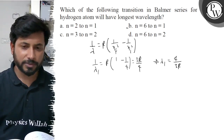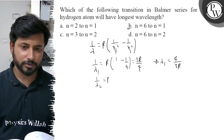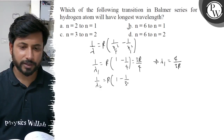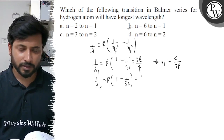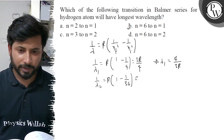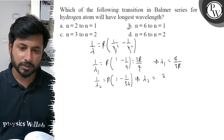Similarly, for Option D (n = 6 to 1): 1/λ₂ = R × (1 − 1/36). Therefore λ₂ = 36/(35R).